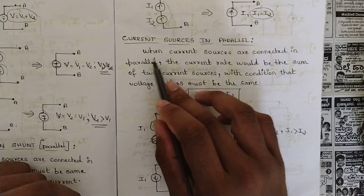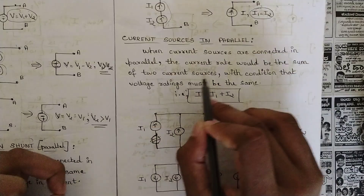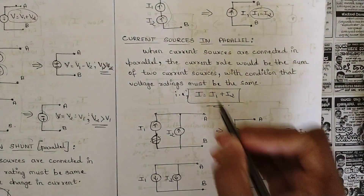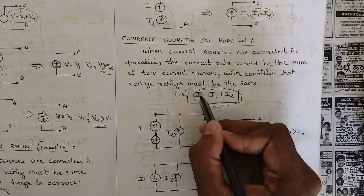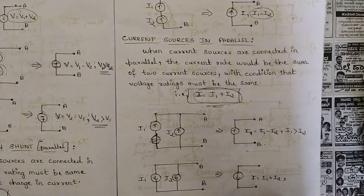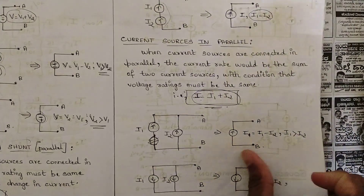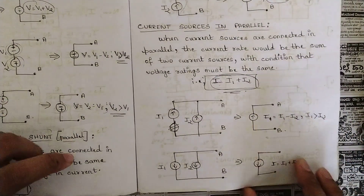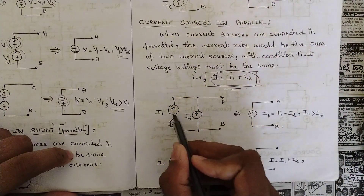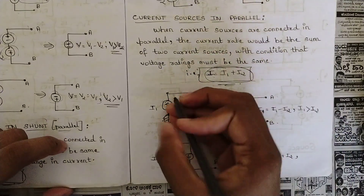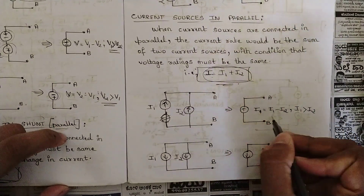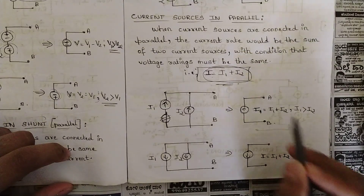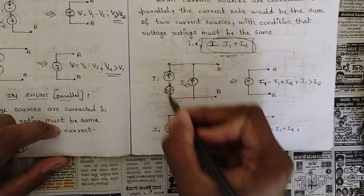Current sources in parallel — this is very important: when current sources are connected in parallel, the current would be the sum of the two current sources, with the condition that voltage ratings must be the same. So I = I1 + I2, and the voltage remains constant. Between terminals A and B, the current sources I1 and I2 are connected in parallel with the same direction, so they are added into a single current source.